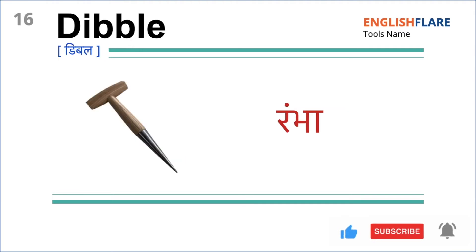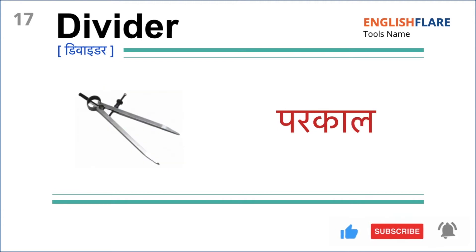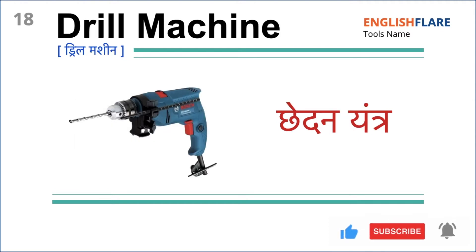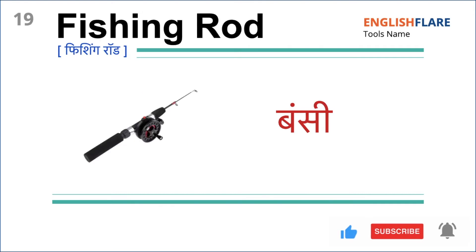Dibal — Rambha. Divider — Parakal. Drill Machine — Chhedan Yantr. Fishing Rod — Bunsi.